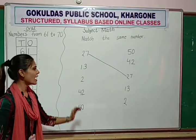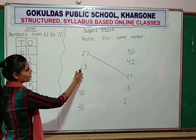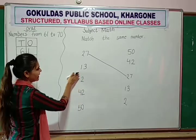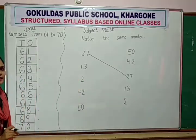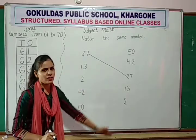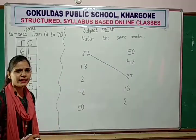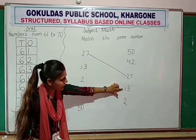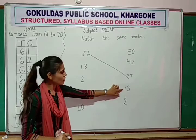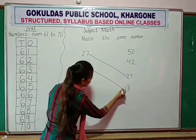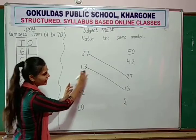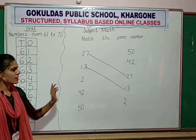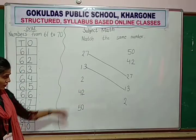Match the same numbers. Now next is 13. Check this line. Where is 13? Here, 13. Here, 13 also. So you match same numbers.